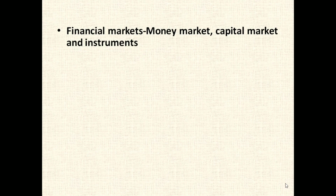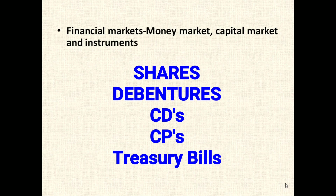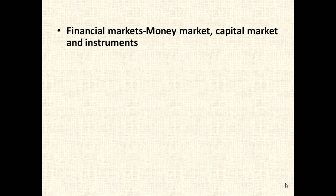In financial markets, study two main markets: the money market, which is a short-term market, and the capital market, which is a long-term market where shares, debentures, and other long-term securities are bought and sold. For capital market, cover shares, debentures, and methods of issuing shares such as rights issue, public issue, initial public offering (IPO), preferential allotment, and private placement. For the money market, study instruments like treasury bills, certificates of deposit, and commercial papers.